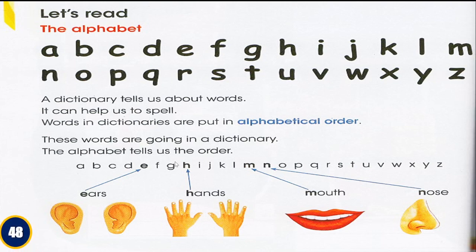The alphabet tells us the order. If you choose a letter in the dictionary — for example E — we have words that start with E, such as ears. We also have H for hands, M for mouth, and N for nose. For each letter we have the word and also a picture of the word, so you can learn about both the word and the letter.